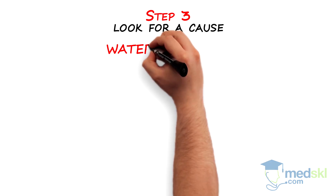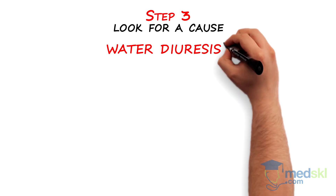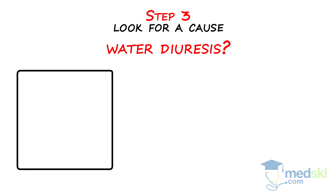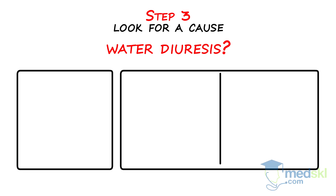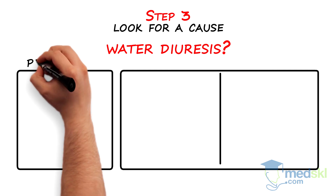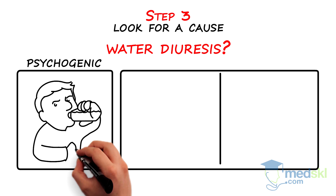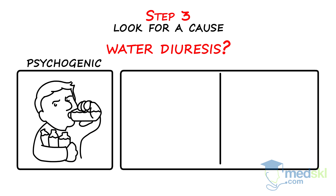Next, consider a water diuresis. There are three causes for water diuresis. Psychogenic polydipsia is when the patient drinks excessively and is often associated with psychosis.